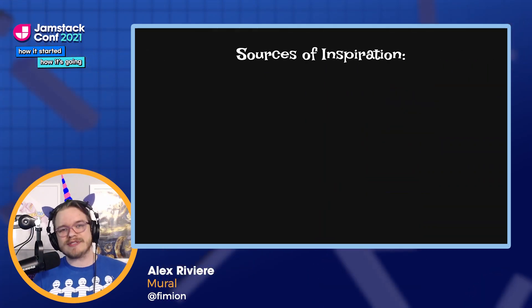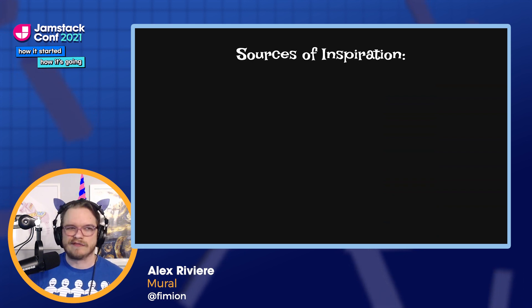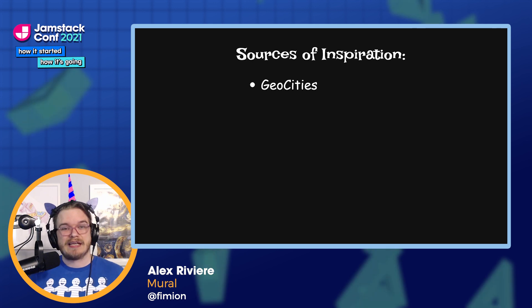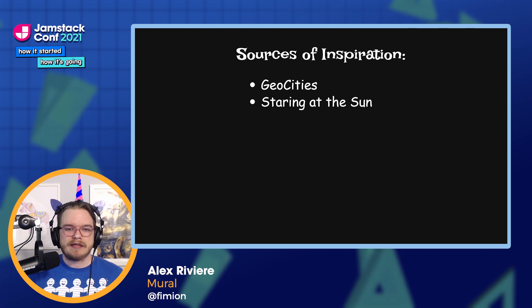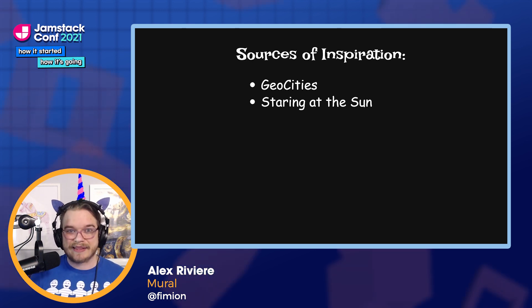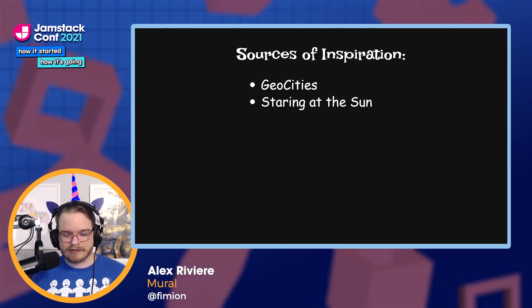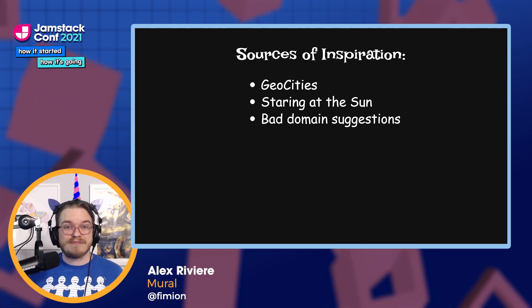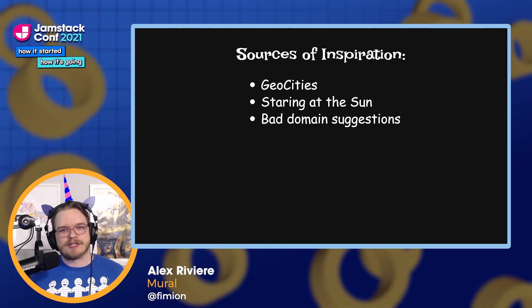My sources of inspiration for these bad ideas come from all over the place. My design inspiration comes from GeoCities — kids, if you don't know what GeoCities is, go look it up on Yahoo. I also get bad ideas from staring at the sun. That's a lie, I don't go outside. And I also get bad ideas from bad domain suggestions, and that's where today's inspiration comes from.